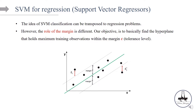The idea of SVM classification can be easily transposed to regression problems. However, the role of the margin is going to be slightly different. Our objective in regression is to find the hyperplane that holds the maximum training observations within the margin epsilon. This margin is our tolerance level.